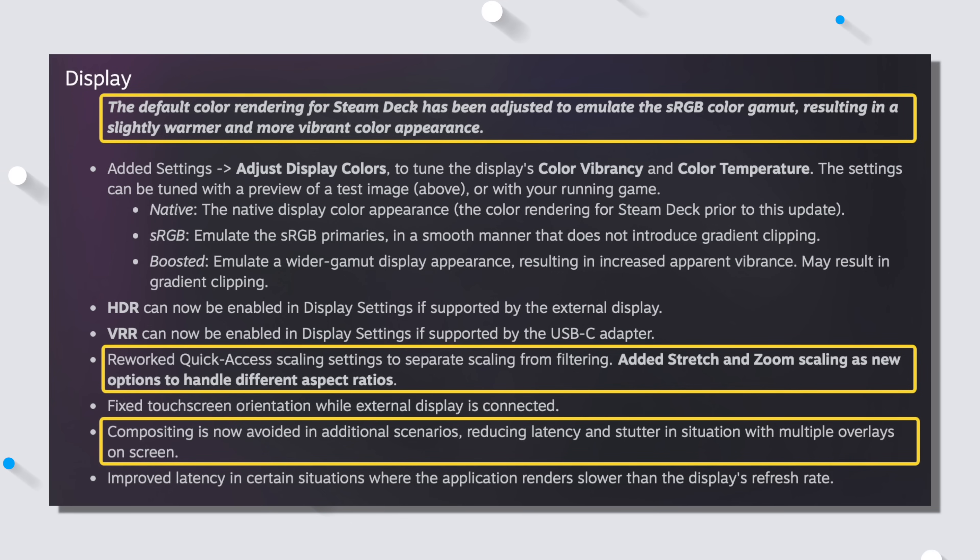sRGB basically emulates the sRGB primaries without clipping any of the colors. Clipping — imagine a bar chart where a bar goes all the way off the top of the paper; you don't get to know how tall that bar is. That's clipping, and we don't like it. Boosted emulates a wider gamut display appearance with better vibrance, but you may end up with some clipping, meaning your gradients won't be as smooth.